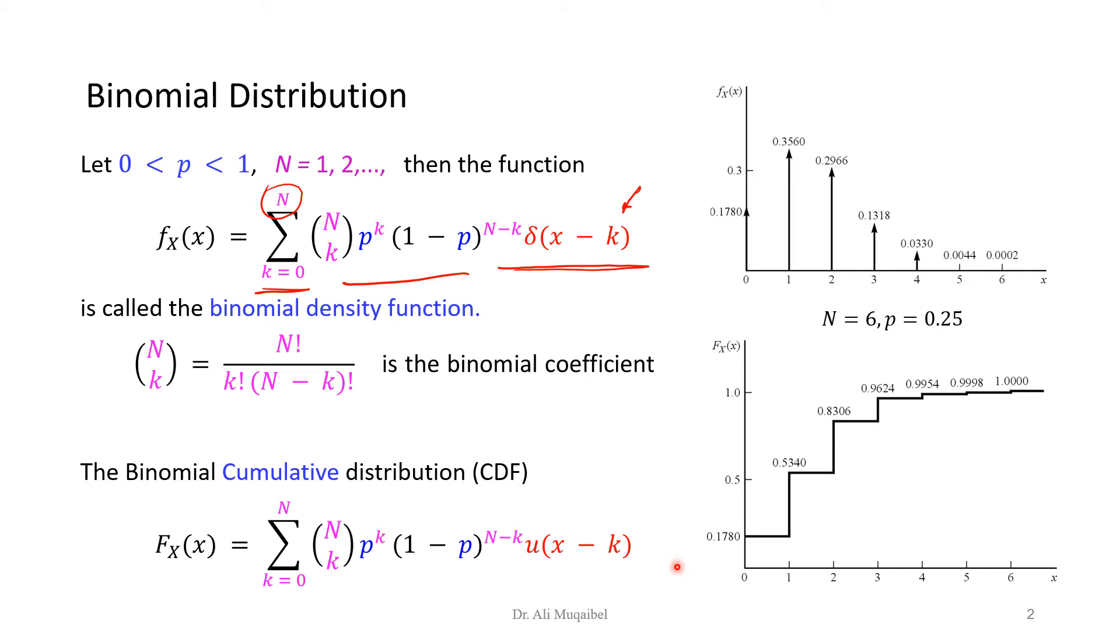In the lower sketch, we have the CDF, which is the integral of the upper curve. We start from 0, then it's 0.178. You add these two numbers together, you get 0.534, and so on, we get a maximum of 1. So on the right-hand side, we're just showing you one example for n and p of 6 and 0.25.